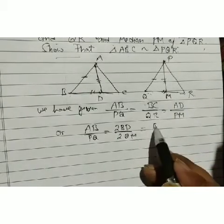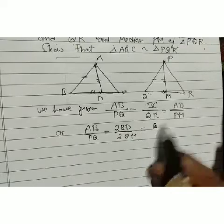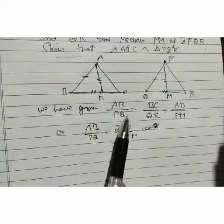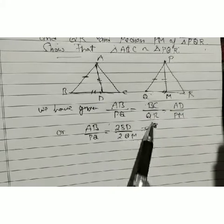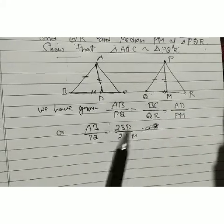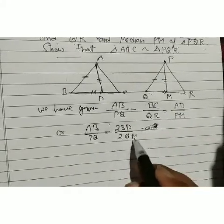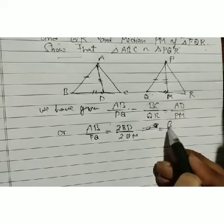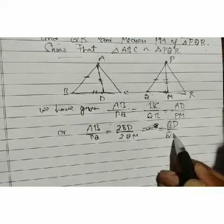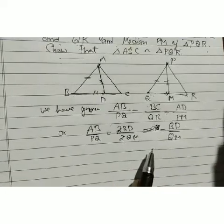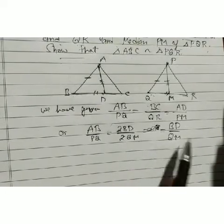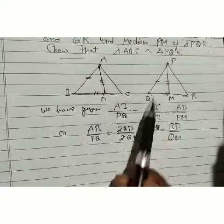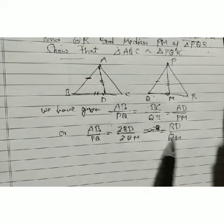Taking just the two ratios AB/PQ and BC/QR, and replacing BC with 2·BD and QR with 2·QM, the 2s cancel. So we get AB/PQ = BD/QM.